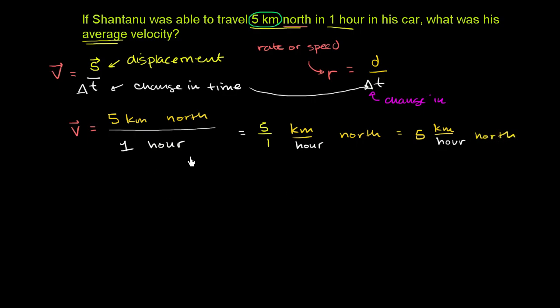So that's his average velocity. 5 kilometers per hour. And you have to be careful. You have to say to the north if you want velocity. If someone just said 5 kilometers per hour, they're giving you a speed or rate or a scalar quantity. You have to give the direction for it to be a vector quantity.